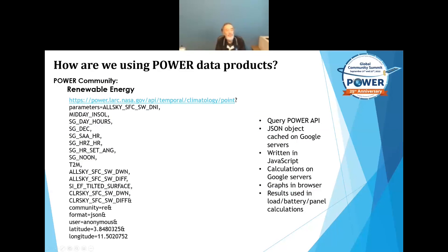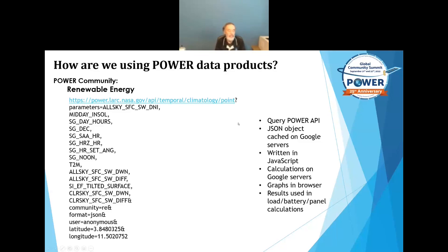The way I actually use this is to make an API call like the one on the left, and you get back a JSON object, which is very easily converted to a JavaScript object. The entire project is in JavaScript and runs on the Google platform, so all the calculations are done on Google servers. When running this today, it takes about 24 seconds to get the data back from the Power API, and three to four seconds to do the calculations and format the presentation. The graphs are done in the browser when you click on them.